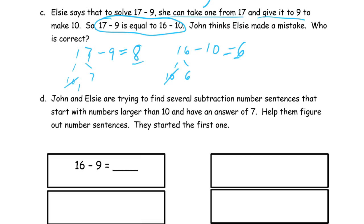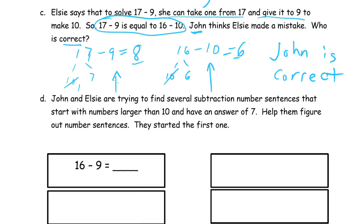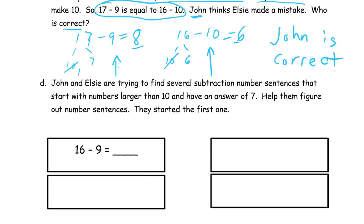Otherwise they would be equal, right? So we're going to write that John is correct — that's how you spell correct. John is correct. And there's your proof — you have to have this. Either you could draw pictures and cross out to show it, or you could use number bonds. Either way, you have to show it — using your choice to show that those number sentences, that's how you solve them.